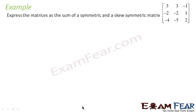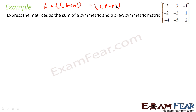Let's take one more example. Here also we have to convert a 3×3 matrix into a sum of symmetric and skew-symmetric matrix. If I assume this is A, I have to write it in the form 1/2 (A + A') + 1/2 (A - A'). The reason I'm taking this question is because it is a 3×3 form — the last was 2×2. So the matrix A is [3, 3, -1; -2, -2, 1; -4, -5, 2].